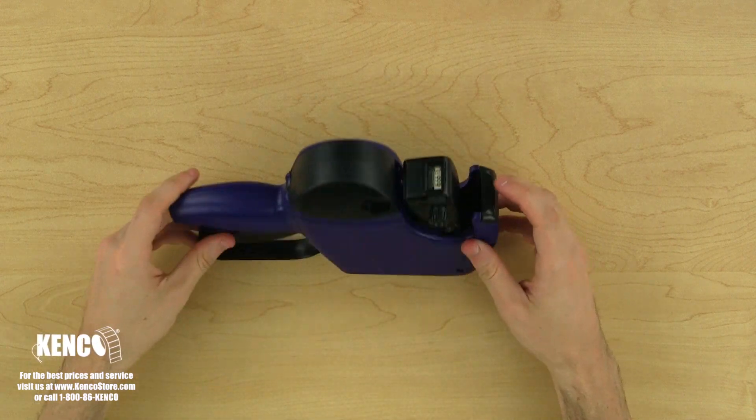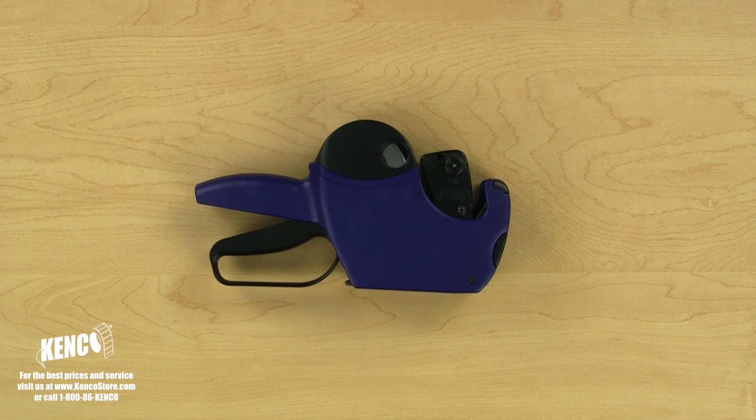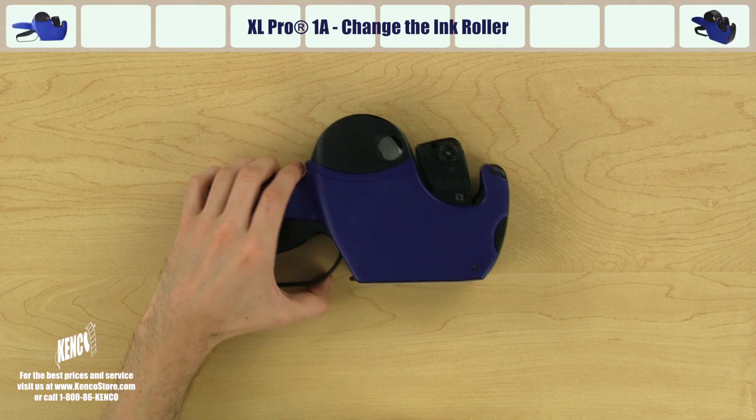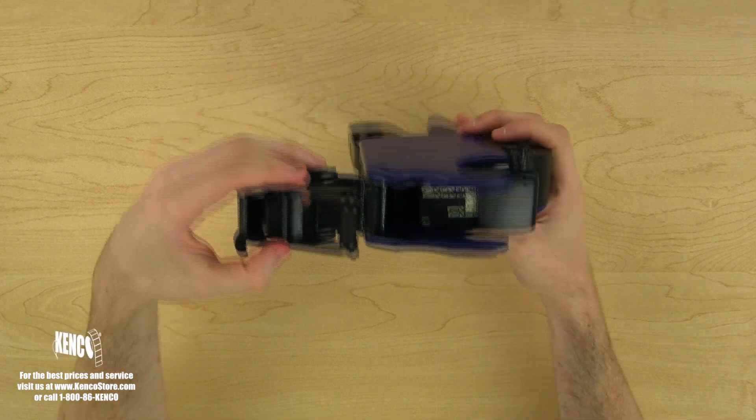Now that we know how to properly load and adjust the XL Pro 1A label gun, let's learn how to change the ink roller. On the front of the gun, we will see the ink roller assembly door. Let's open it up by pulling back on the latch.